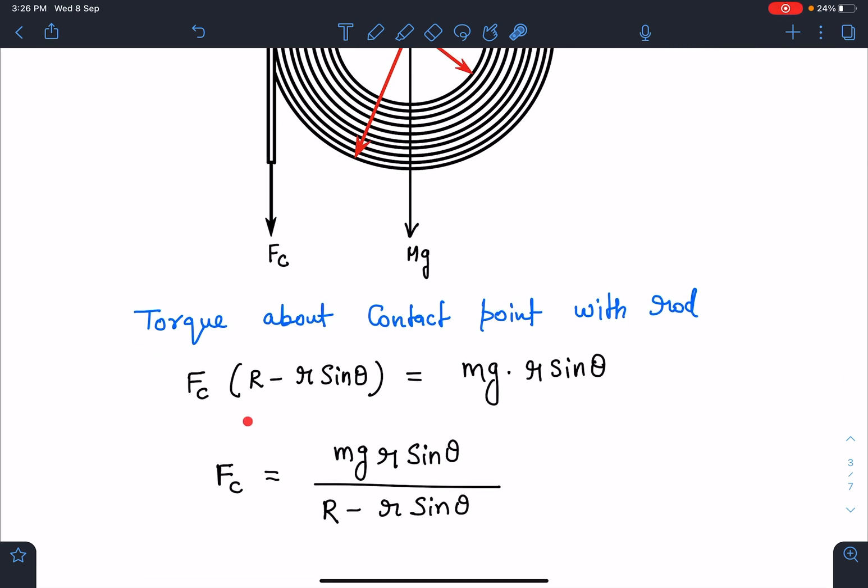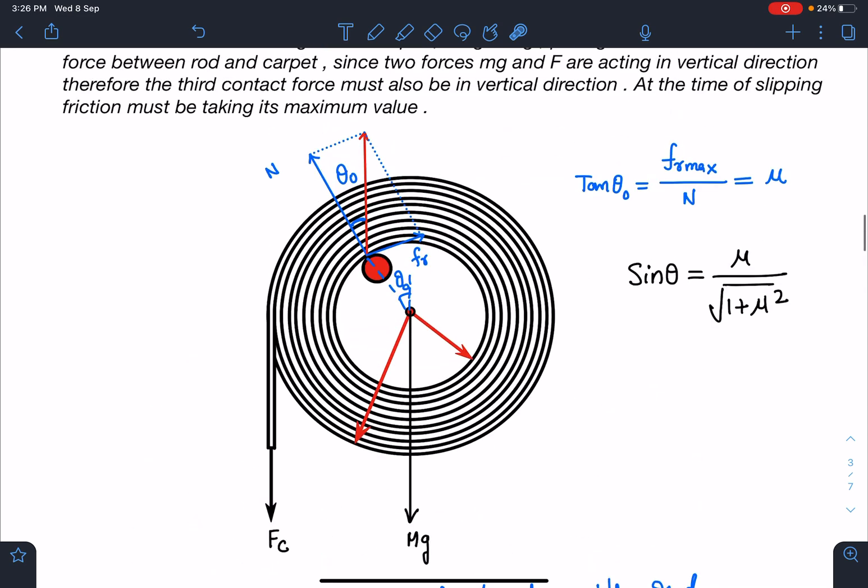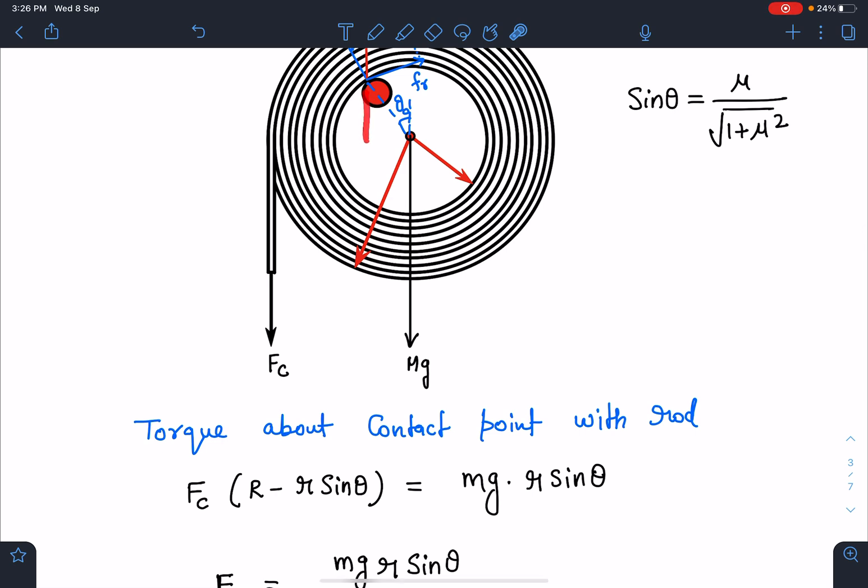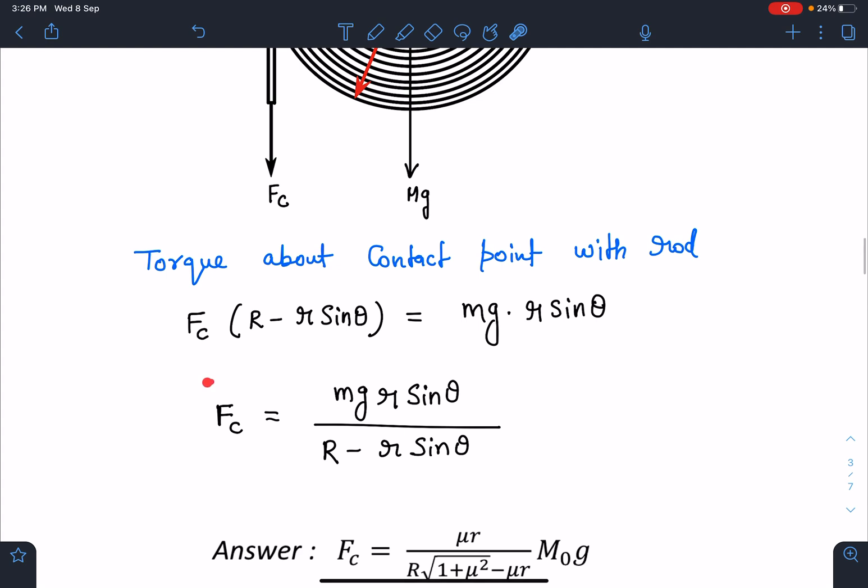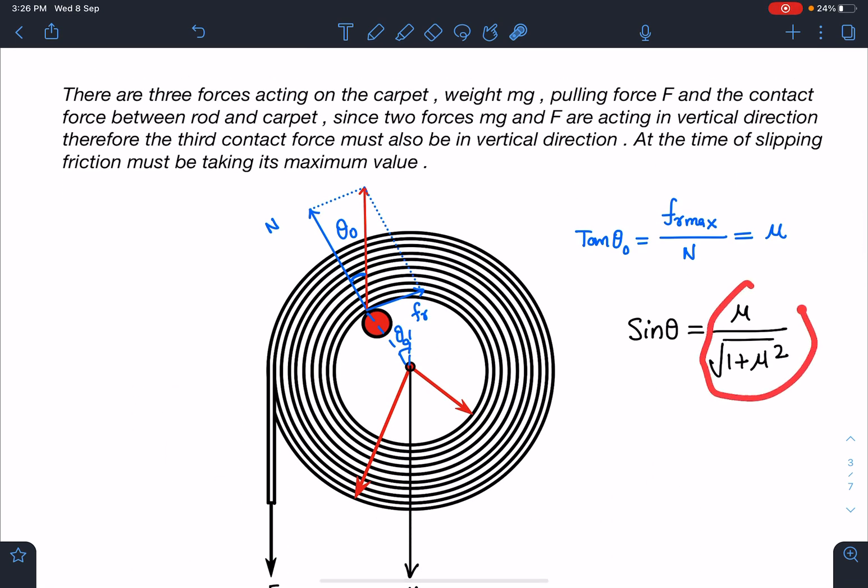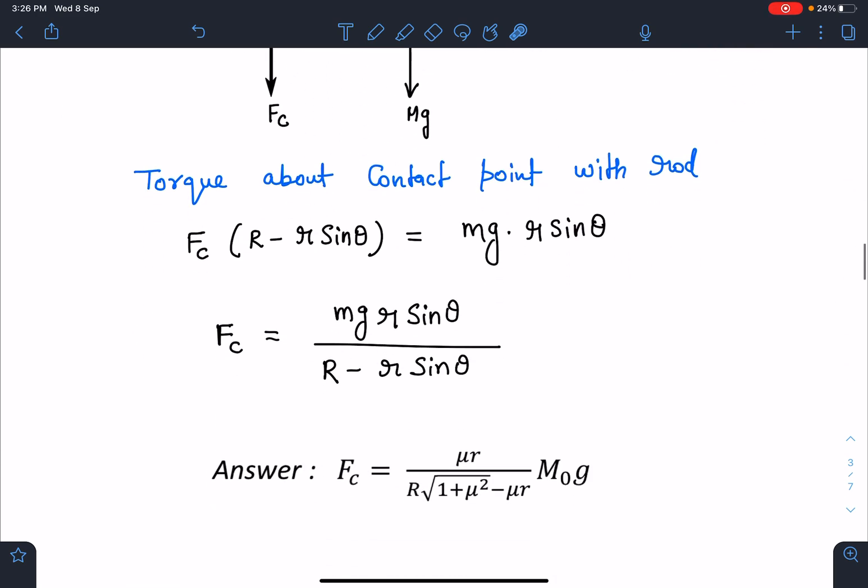We can see here Fc times (R minus r sin θ) and that must be equal to mg times r sin θ. So directly we will get this Fc value here: mg r sin θ by (capital R minus small r sin θ). Sin θ value is μ by root of 1 plus μ square. So when we simplify this we get this answer as μR. mg will come outside. This will become μ times 1 by (root of μ square R minus R μ by root of 1 plus μ square), that gets cancelled and on simplification this answer will come.